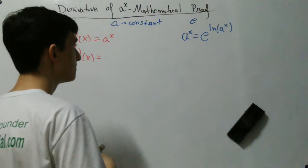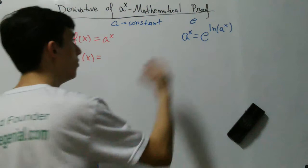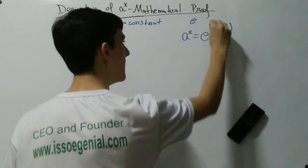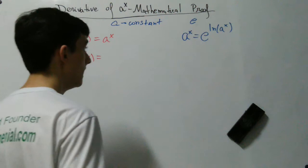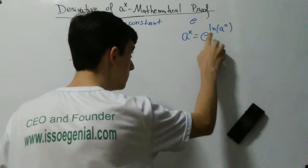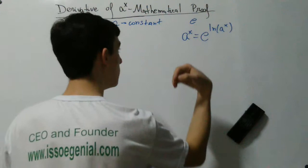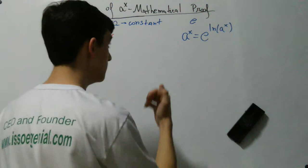Natural log is the logarithm base e, so natural log of a to the x is logarithm base e of a to the x. Why is this true? This logarithm is asking: to which power do I raise e, which is the base, in order to reach a to the x? And the answer is what this logarithm is asking — to which number we raise e in order to reach a to the x. Then we are raising e to that number, so obviously we are going to reach a to the x.